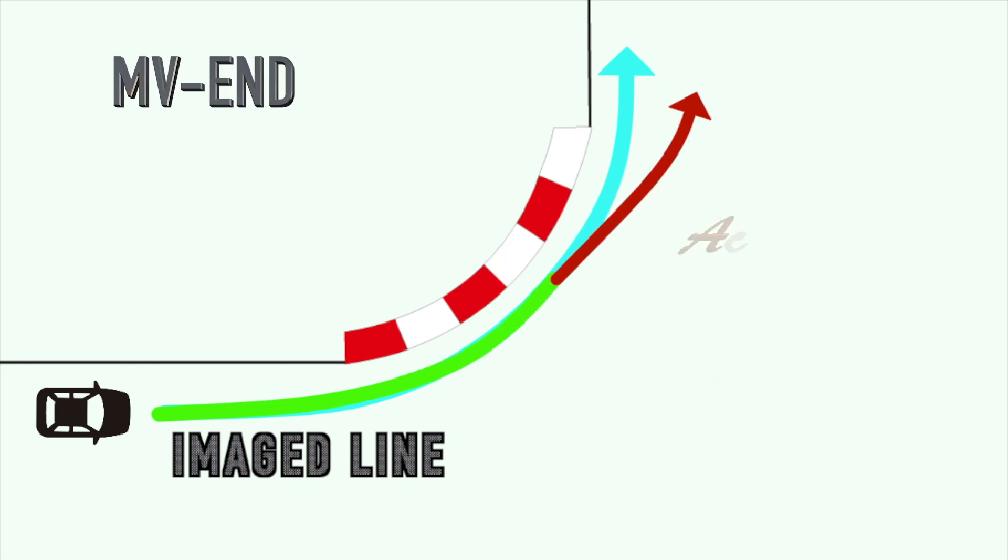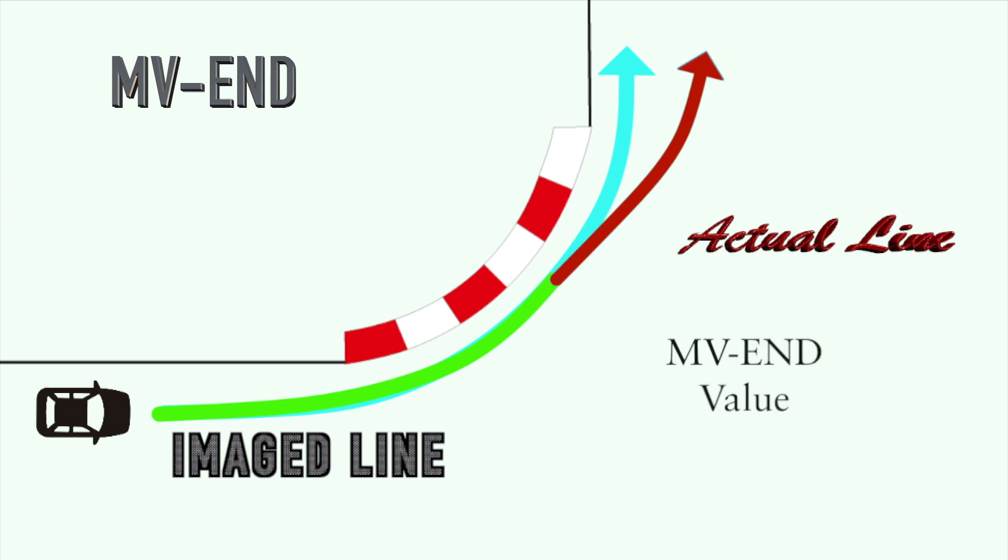After you are setting MV-MID, if the actual line is still outside, increase the MV-END value and the actual line will cross to your image line. If MV-END value is too high, the car will high-side in end term of cornering.